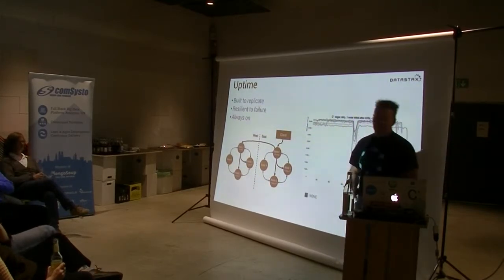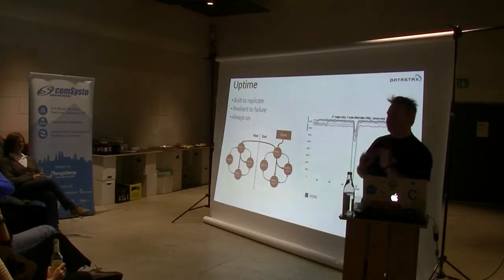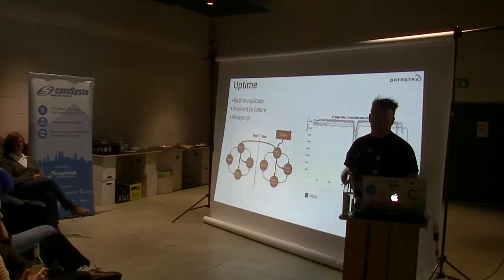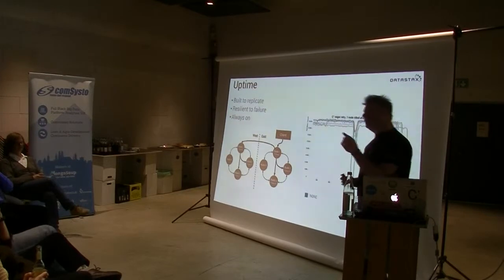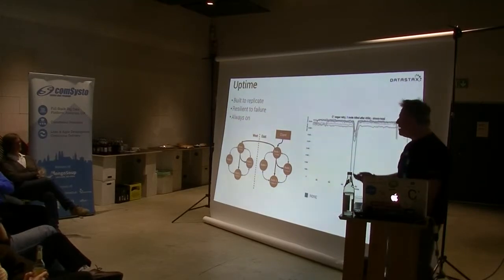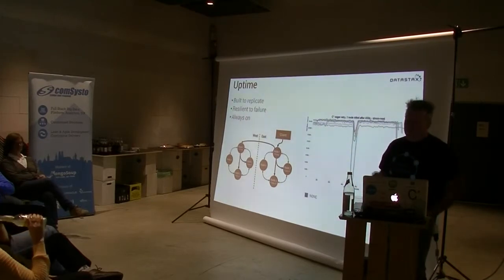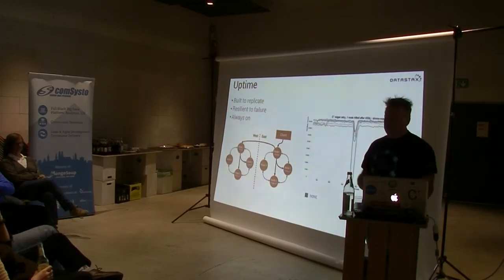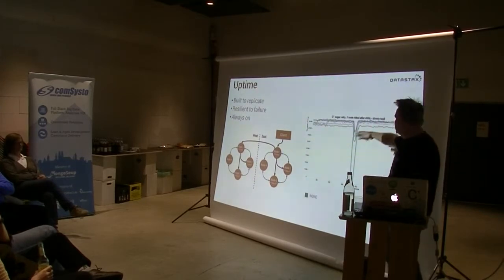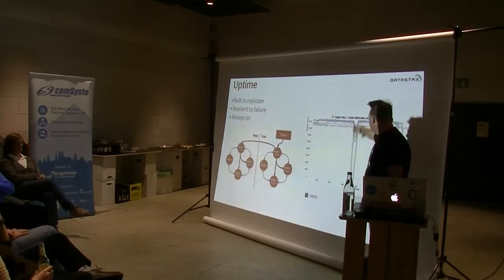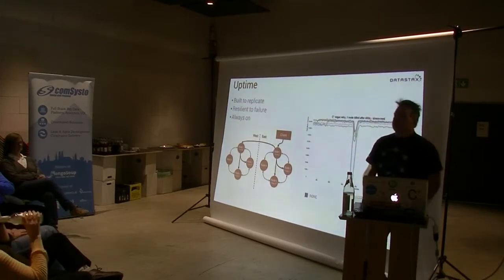Cassandra is built to replicate — that is just the default. One of my favorite questions on mailing lists is 'how do I get Cassandra not to replicate?' Use Postgres. It's an out-of-the-box experience, and you want that always-on availability. This graph shows a failure mode we introduced into a test system: we're doing 40,000 reads per second, we took one node out, and we have rapid read protection where the nodes figure out what's going on and reroute all that information. That's what you need in your application — you don't want to get up at 3 a.m. when it goes down.